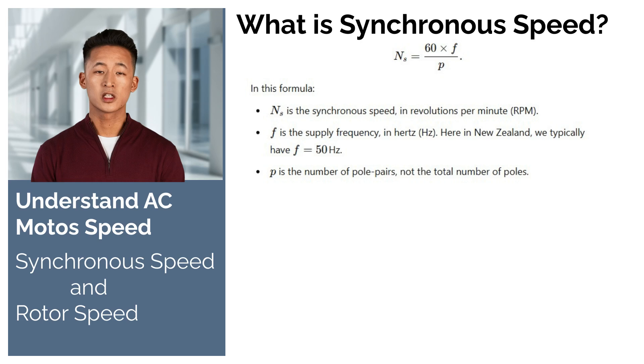In this formula, synchronous speed is measured in revolutions per minute. Frequency is the frequency of the electrical supply, measured in hertz. Pole pairs refer to the number of pole pairs in the motor.